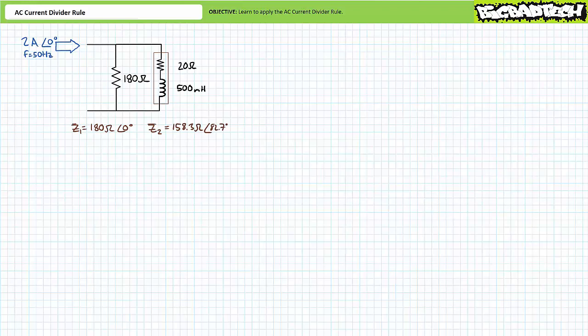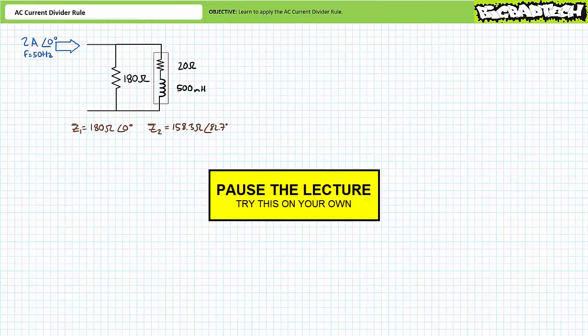Again, note we are not being asked to solve for voltage nor are we being asked to solve for total impedance. Our only mission is to solve for current through each individual element as quickly and directly as possible using only the AC current divider rule. By all means, pause the lecture and try this on your own.